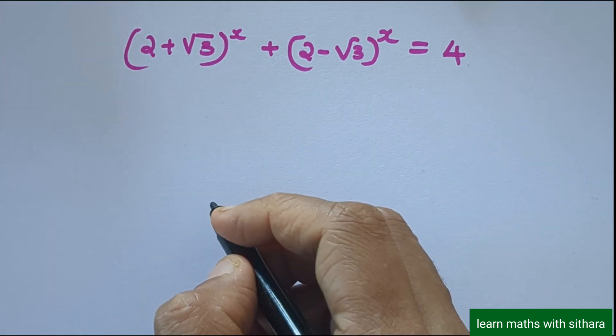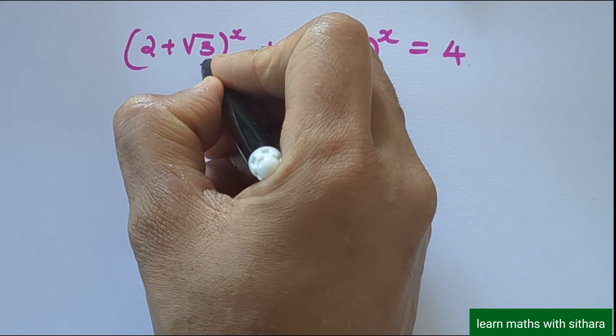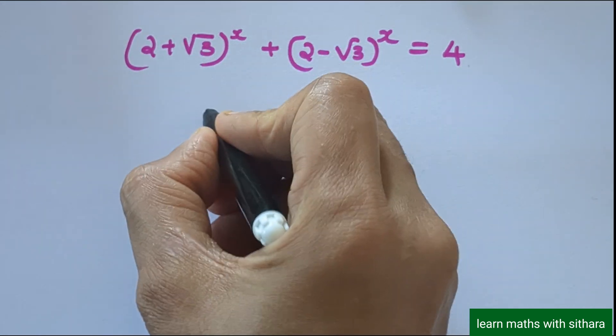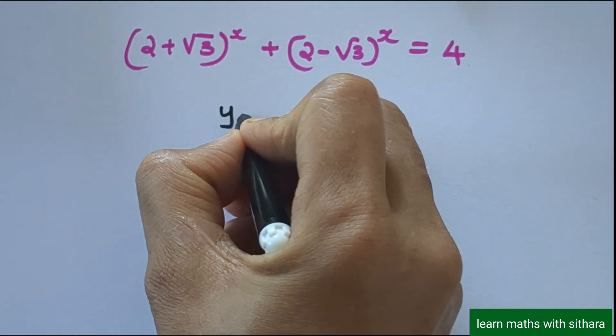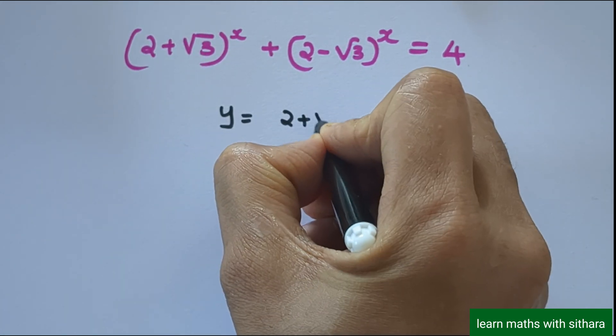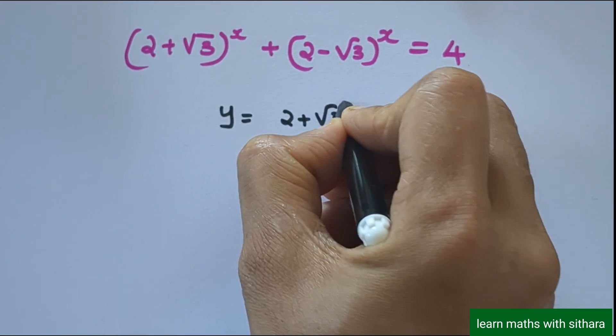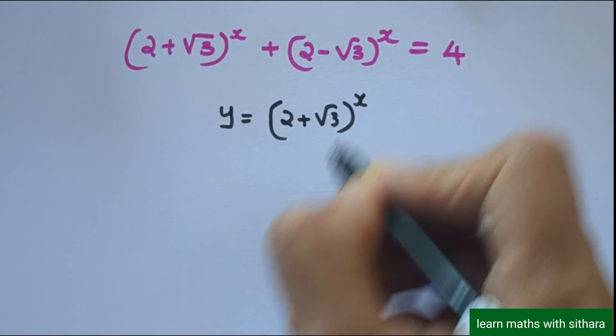Let's substitute (2 + √3) as y. So y equals (2 + √3) raised to x.